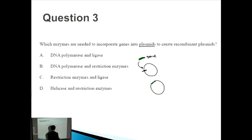You get that extra green gene spliced in there, and that's called a recombinant plasmid. But what enzyme is involved? The thing that cuts it open is a restriction enzyme, and the thing that connects it up or links it together is a ligase. That means this answer here is correct: restriction enzymes and ligase.